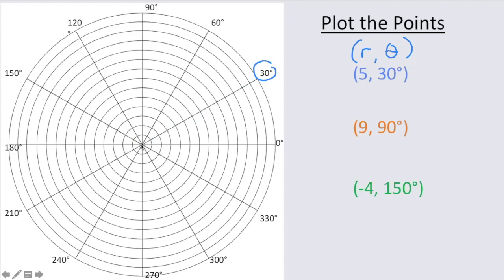From the positive x-axis. So our 30 degree line is right here, so we're going to be somewhere on this radius, but how far are we from the origin on that radius? We're 5 units. So I'm counting these concentric arcs.